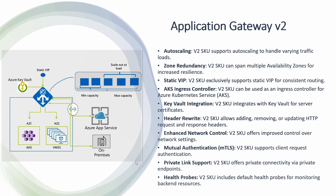Version 2 also supports header rewrite and enhanced network control. Mutual authentication is also supported — also called client authentication — where the web browser must present a digital certificate to Application Gateway, which verifies it against its own certificate. Once the user certificate is accepted and trusted, the connection is established. Version 2 additionally supports private endpoint support and health probes. Application Gateway constantly monitors the health of backend servers and routes traffic only to healthy servers, preventing packet loss.